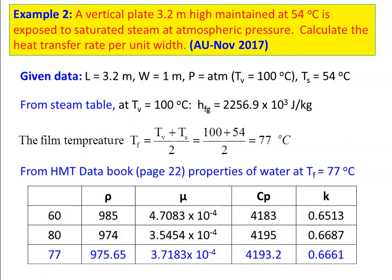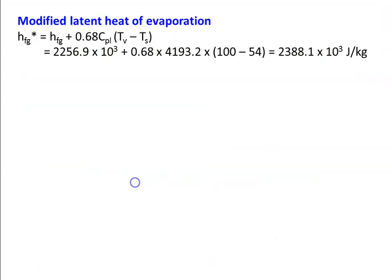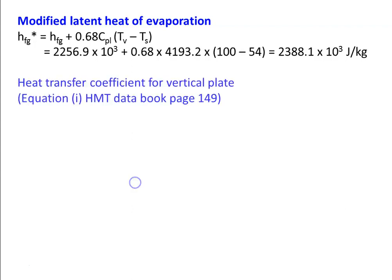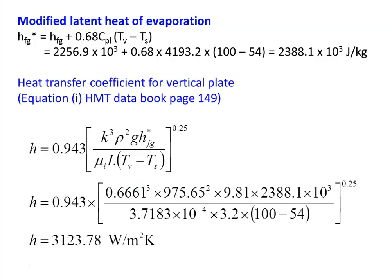At 77°C by interpolation: density ρ = 975.65 kg/m³, μ = 3.7183 × 10⁻⁴ N·s/m², CPL = 4193.2 J/kg·K, and K = 0.6661 W/m·K. The modified latent heat of evaporation: HFG* = HFG + 0.68 × CPL × (Tv − Ts), giving HFG* = 2388.1 × 10³ J/kg. For the vertical plate, using the same correlation H = 0.943 × [K³ × ρ² × g × HFG*] / [μ × L × (Tv − Ts)]^0.25, and substituting all values, H = 3123.78 W/m²·K.